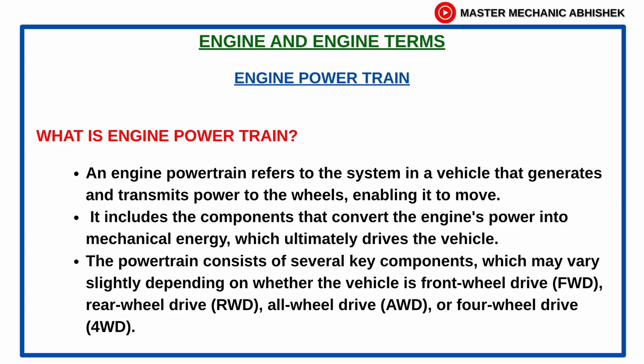and transmits power to the wheels, enabling it to move. It includes the components that convert the engine's power into mechanical energy which ultimately drives the vehicle. The powertrain consists of several key components which may vary slightly depending on whether the vehicle is front wheel drive (FWD), rear wheel drive (RWD), all wheel drive (AWD), or four wheel drive (4WD).